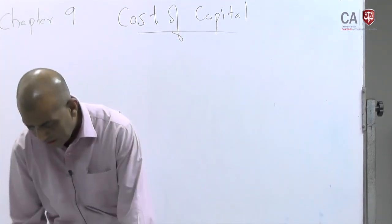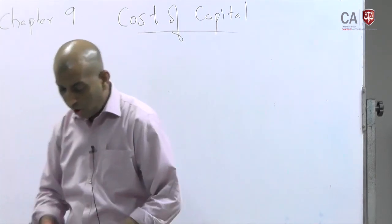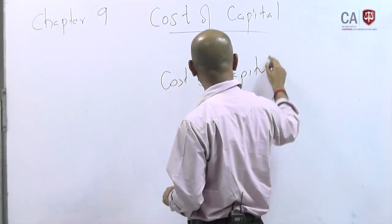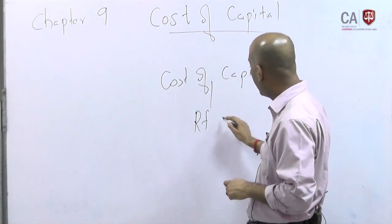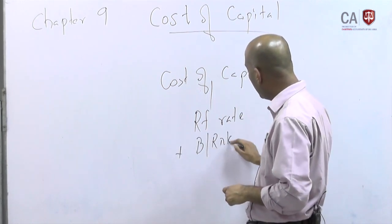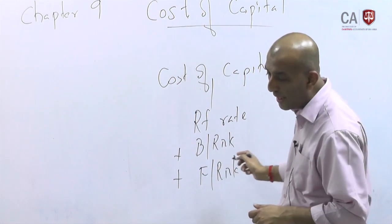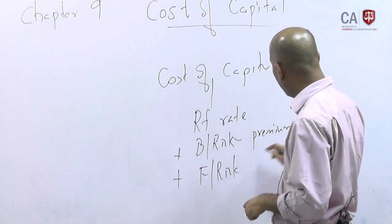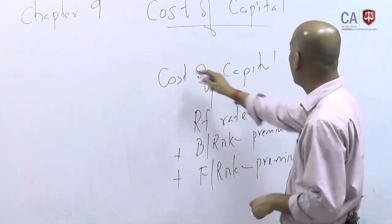Referring to Chapter 9 in your study pack on cost of capital: the cost of capital can be represented as risk-free rate plus business risk premium plus financial risk premium. You need to understand these three components — risk-free rate, business risk premium, and financial risk premium — together form the cost of capital.